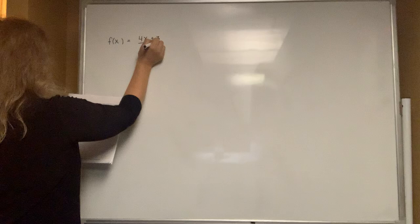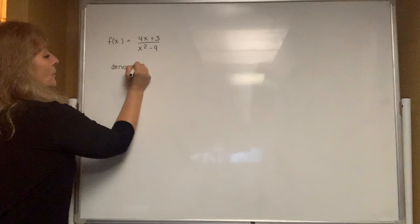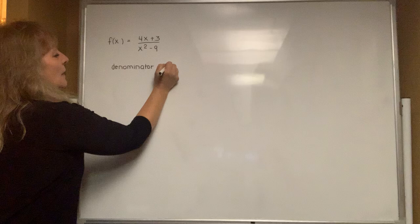There are four different types. The first one is f of x equals four x plus three divided by x squared minus nine. What do you know about fractions? You know that the denominator cannot equal zero.